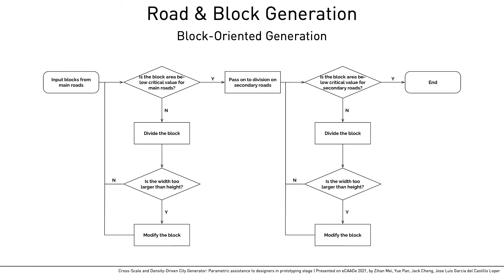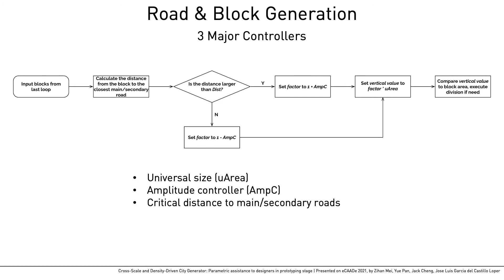Before each loop, the shape of the blocks is checked and modified if needed. Areas near the centers tend to have higher network density and smaller block size. Thus, the critical values are not the same for each block, even in the same loop. They are controlled by three parameters: the universal size defines the overall size to stop subdivision; amplitude controller defines the size deviation in the same loop; and critical distance checks if the blocks are near the urban center, so a smaller critical value should be applied.